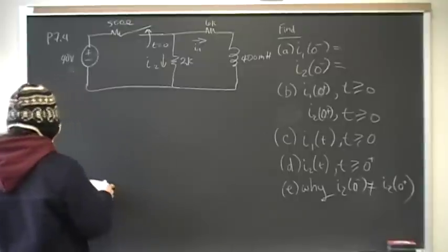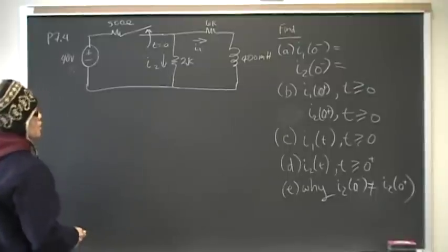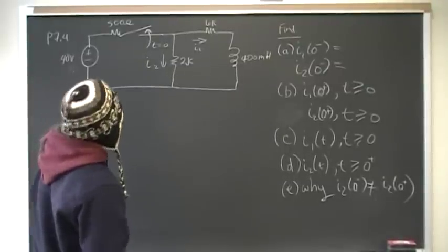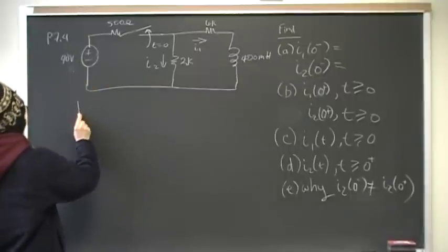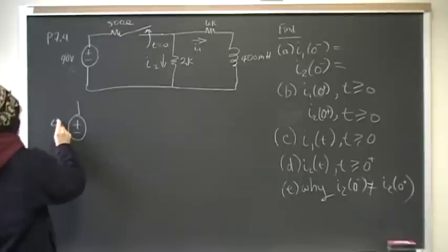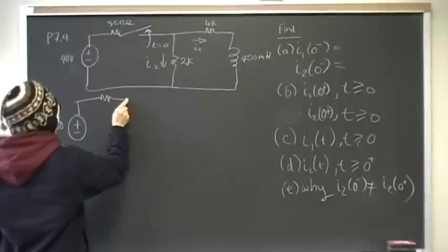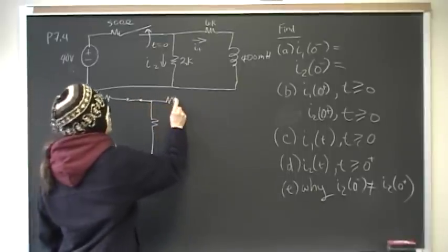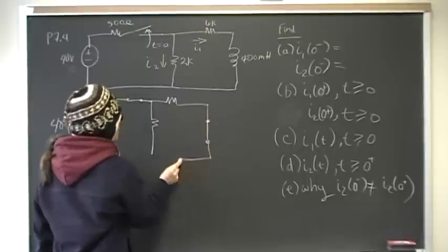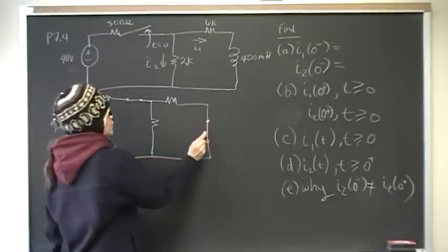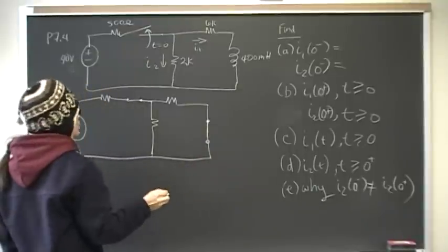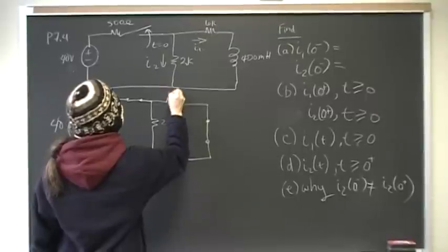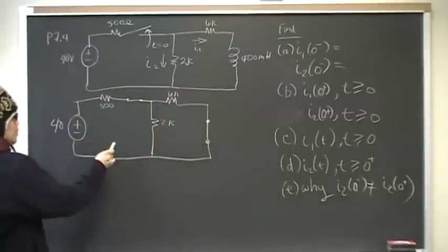That's the description of the problem. In the first part, we want to find out right before time zero what those branch currents are. Let's take a look at what the circuit looks like before time zero. We have 40 volts, 500 ohms here, and a closed switch. In the DC steady state, the inductor is a short circuit, and at time zero we know the switch has been closed for a long time, so we are in DC steady state. We have 500 ohms, 2k, and 6k here.